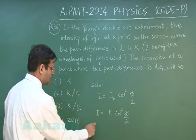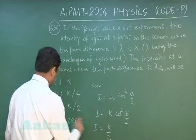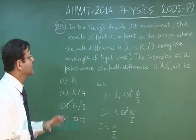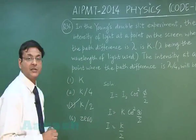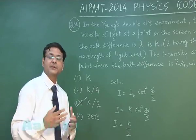The value of I comes out to be k/2, and therefore option 3 is the correct answer to question 36.